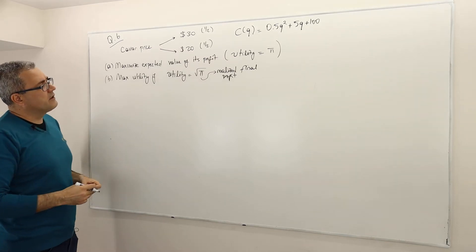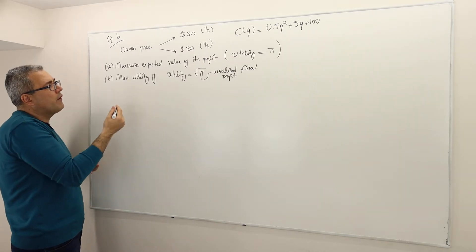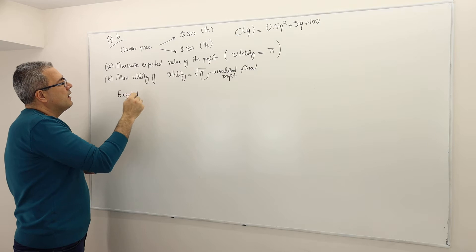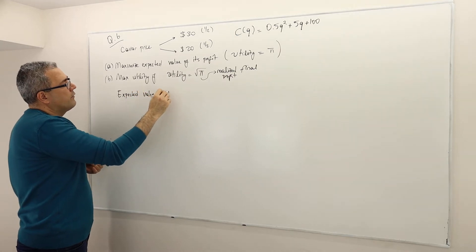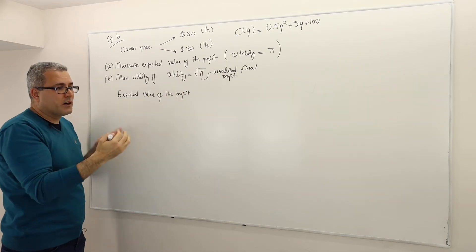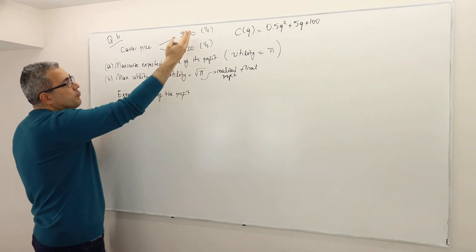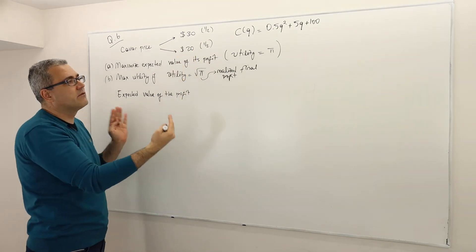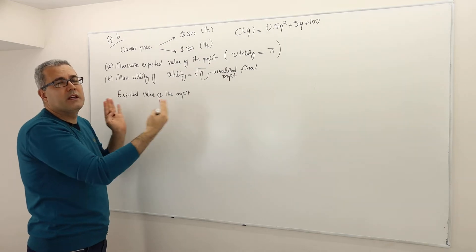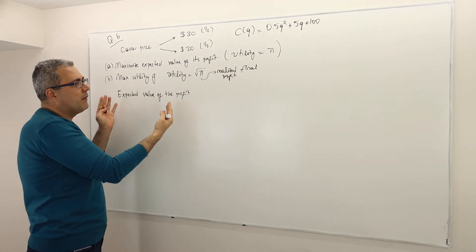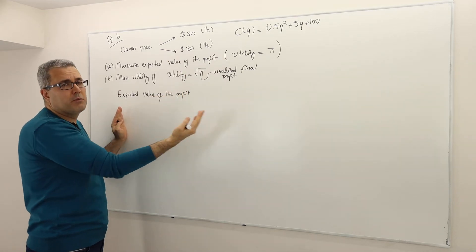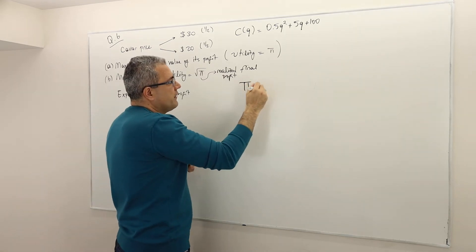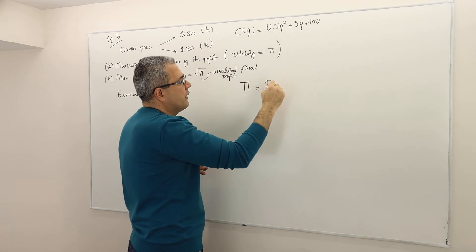How do we answer this? What is the expected value of the profit? It's simple. Remember, there are two events. Event one is when the price is $30. Event two is when the price is $20. You have to calculate the realized final wealth in these two events, then multiply them with the respective probabilities and sum them up. What is the profit? Profit is nothing but revenue minus cost, always.